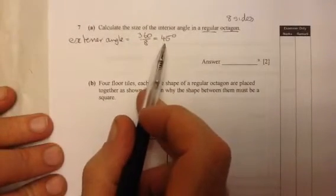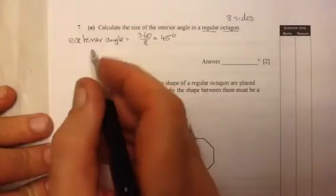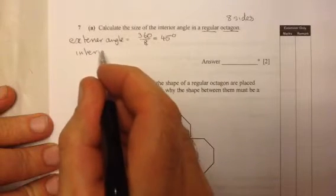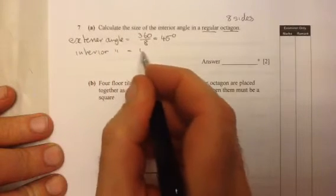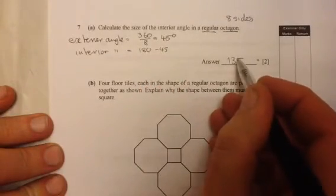Now, what we have to also remember then is an exterior angle plus the interior angle will give you 180. So we know the interior angle is 180 take away 45, which is 135 degrees.